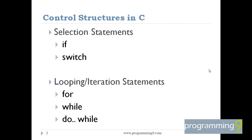First of all, what is a control structure? A control structure refers to the way in which the programmer specifies the order of executing statements. Generally, a C program is a set of statements which are normally executed sequentially in the order in which they appear. This generally happens when no option or no repetitions of certain calculations are necessary.